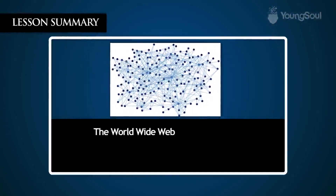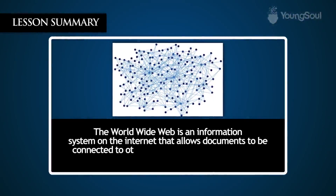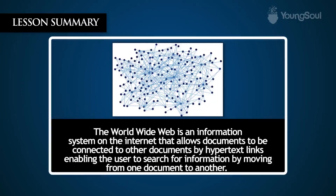In summary, the World Wide Web is an information system on the Internet that allows documents to be connected to other documents by hypertext links, enabling the user to search for information by moving from one document to another.